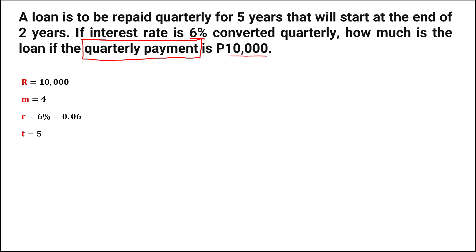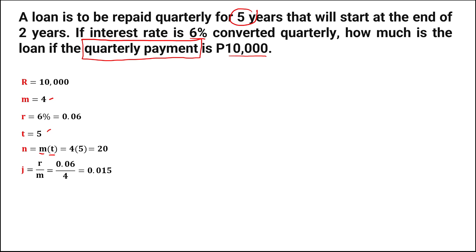Then for the time or the term, that's 5 years, so T is equal to 5. Then for the number of periods, we have M times T, so 4 times 5 — the number of periods is equal to 20. Then for the interest rate per period, we have R over M, so 0.06 divided by 4, giving an interest rate per period of 0.015.